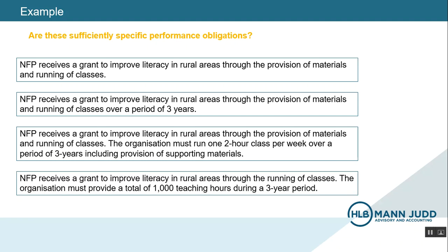The final scenario states that an NFP receives a grant to improve literacy in rural areas through the running of classes. The organization must provide a total of 1,000 teaching hours during a three-year period. Is this sufficiently specific? I would say that it is. The requirement to provide 1,000 teaching hours allows for the transaction price to be allocated and satisfaction of the performance obligation to be determined.